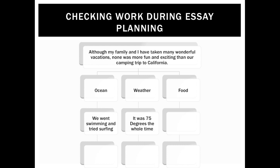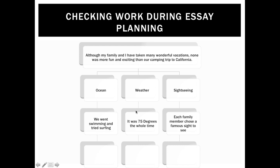Now we move to the evidence step. I have ocean, weather, and food as my three supporting ideas. Under ocean, my evidence is the time we went swimming and tried surfing. Under weather, it was 75 degrees the whole time — weather was perfect. But I don't have a piece of evidence for food because I ended up eating the same thing there that I usually do here. So I had to change food to sightseeing, because now I have evidence: each family member chose a famous sight to see. Not having a piece of evidence told me I had to change my supporting idea.